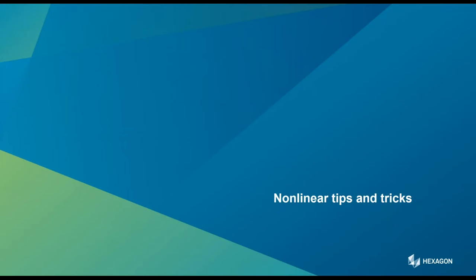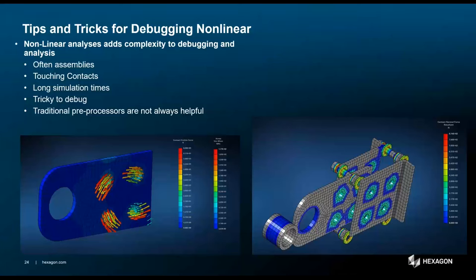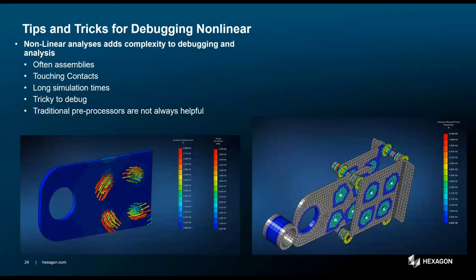Now let's look at some common issues with non-linear analysis. When running non-linear static analysis on assembly models, there's typically a lot of contact between assemblies. Solution times for non-linear analysis are significantly longer than linear static — splitting the load into 10 increments with multiple iterations each can be 10 to hundreds of times longer. This also means it takes longer to debug, and sometimes when post-processing you can't get all the details you're looking for out of your pre and post processor.